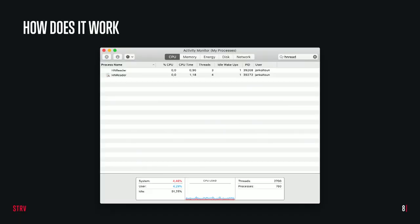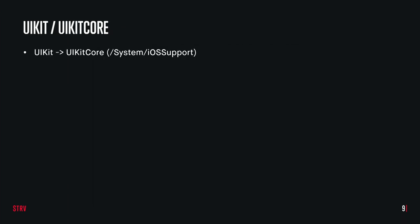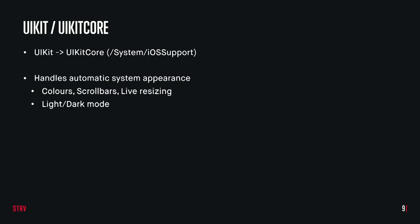And you can see it here. Here's my HNReader application. When I executed it, you can actually see that it's two apps — one of them has an icon, that's the host app; one of them doesn't, that's my Marzipan app. Now UIKit has updates. Right now UIKit is just an interface to UIKit core, which is available either in the iOS support folder on your Mac or on iOS as well. On macOS it handles the automatic system appearance for you — it handles colors, resizing of windows, scroll bars, light and dark mode. It works, I tried.